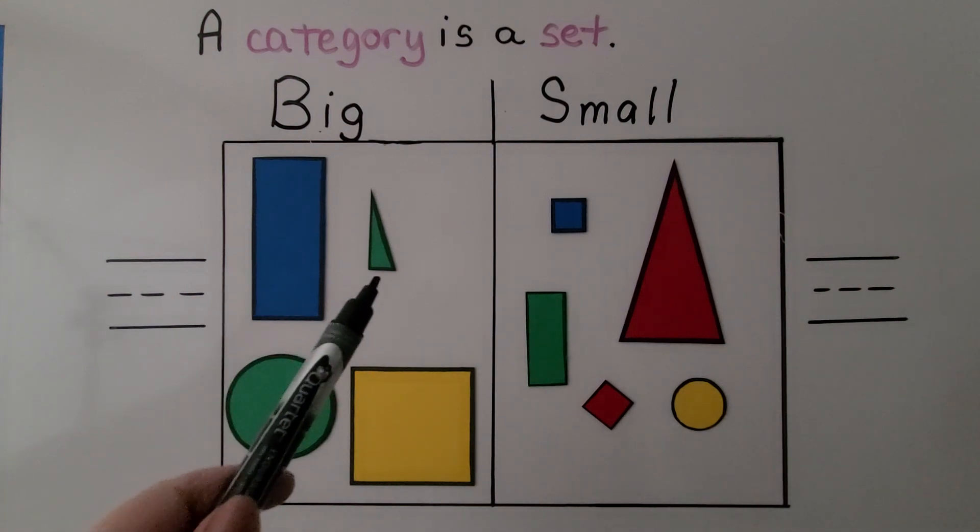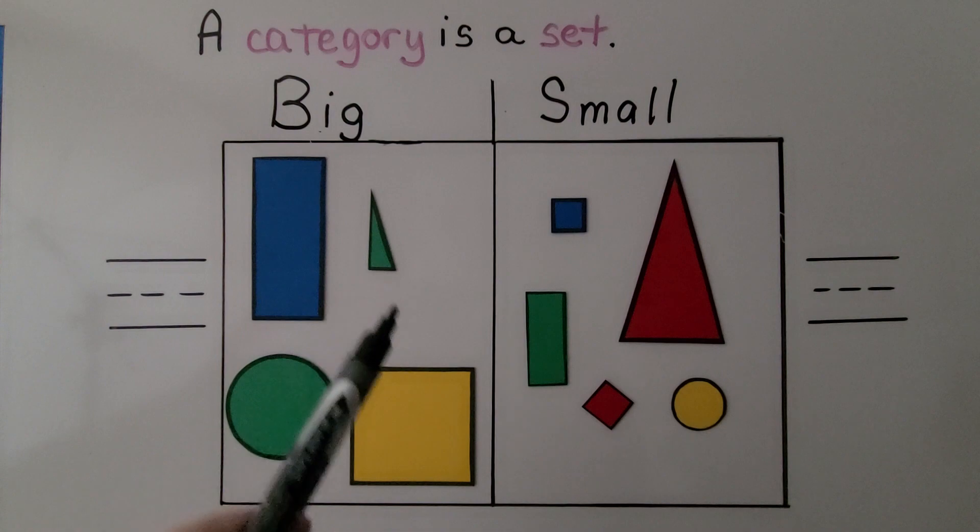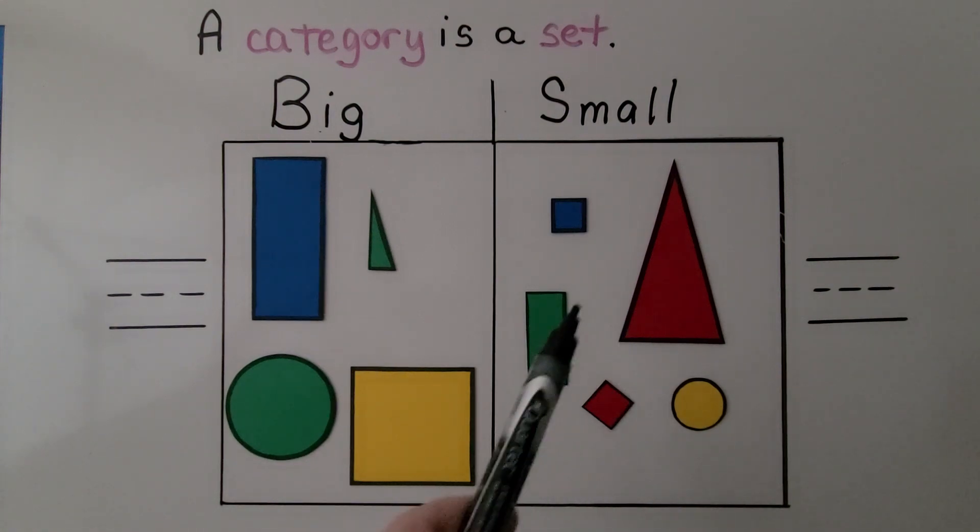Well, these are all big shapes except for the triangle. And what do you notice about this set? Well, they're all small except for the triangle.